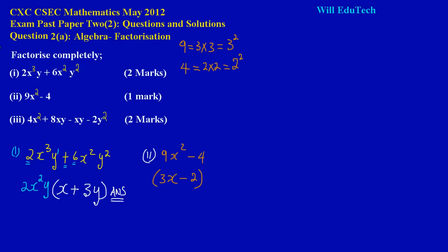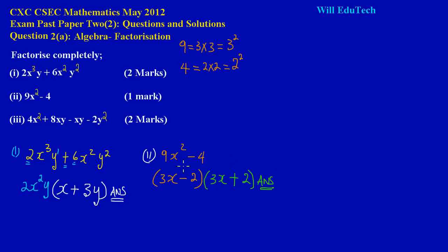You're going to put back your subtraction sign, take the square root of 4 which is 2, then close your bracket. Then open another bracket beside it and rewrite the same contents — 3x — but in this bracket you put a plus sign instead of a minus sign. So the answer is (3x − 2)(3x + 2). If you're unsure, check out our playlist on factorizing the difference of two squares on the channel.